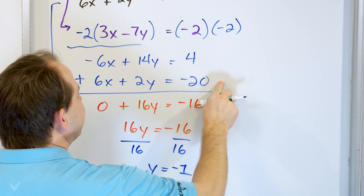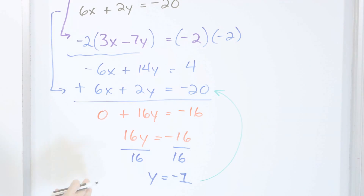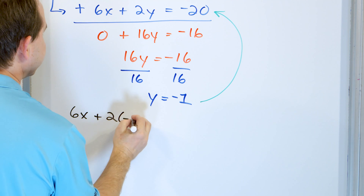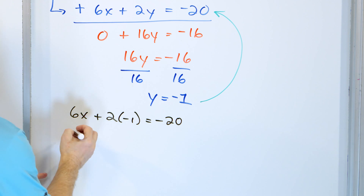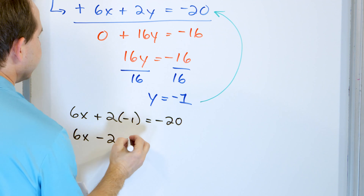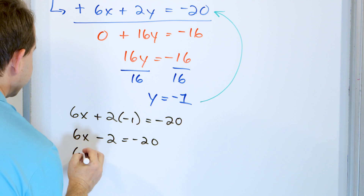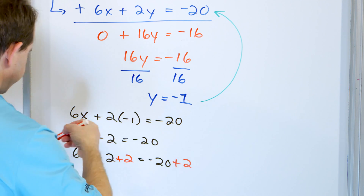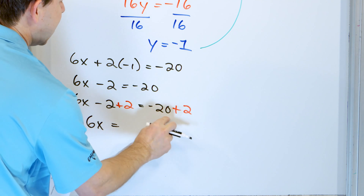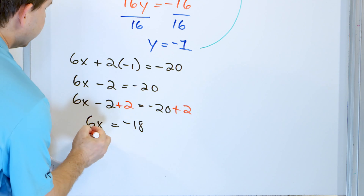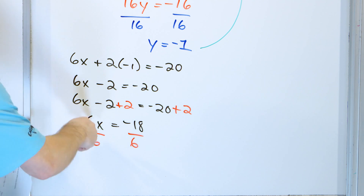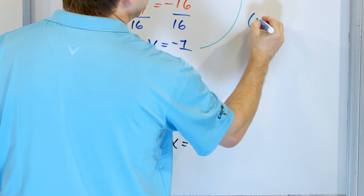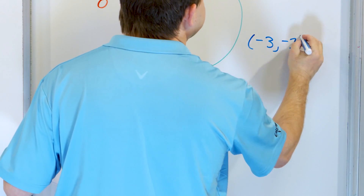I can take y equals negative 1 and put it into either of the original equations. Let's put it into the second one: 6 times x plus 2 times negative 1 equals negative 20, which gives 6x minus 2 equals negative 20. Adding 2 to both sides gives 6x equals negative 18. Dividing by 6, x equals negative 3. So the solution is the point negative 3, negative 1.